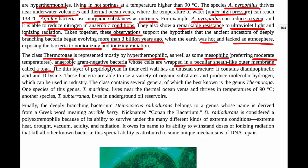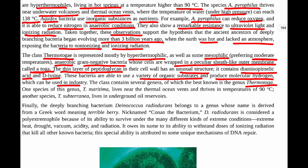So Thermotoga — named for being wrapped in a toga. The thin layer of peptidoglycan in their cell wall has an unusual structure because it contains diaminopimelic acid and D-lysine. These bacteria are able to use a variety of organic substrates and produce molecular hydrogen, which can be used in industry. The class contains several genera, of which the best known is the genus Thermotoga. One species, Thermotoga maritima, lives near thermal ocean vents and thrives at 90°C. Another species, Thermotoga subterranea, lives in underground oil reservoirs.